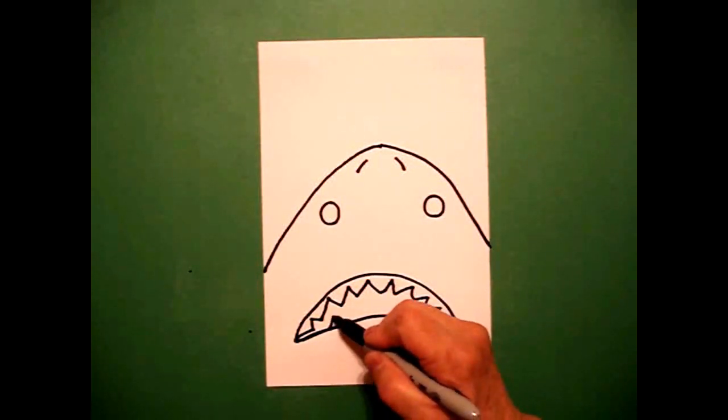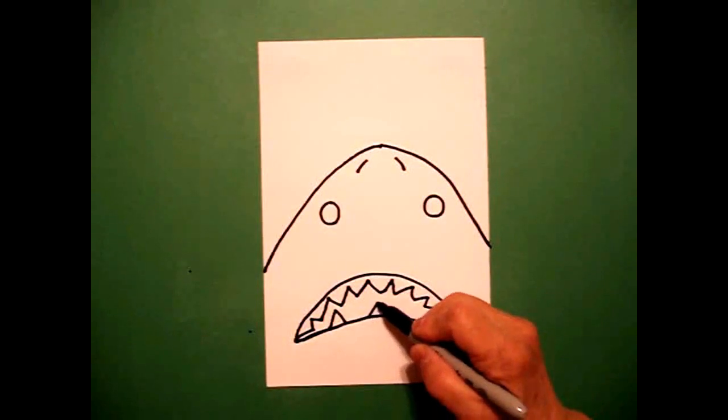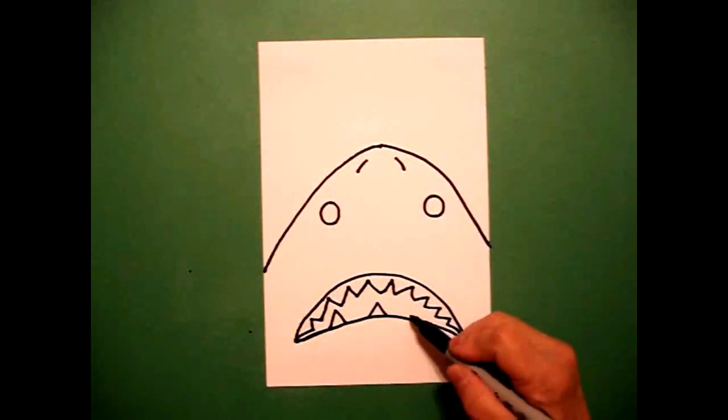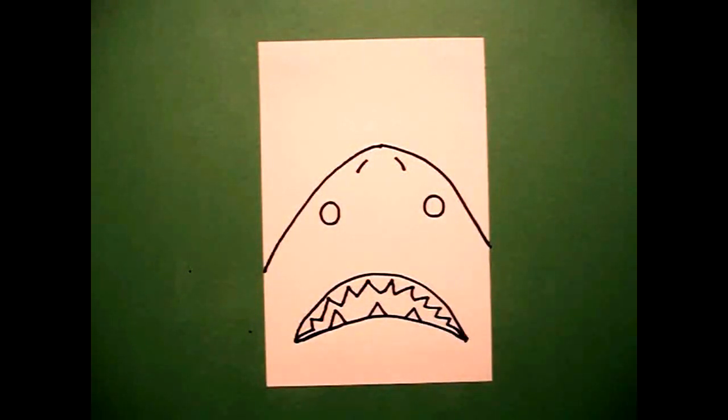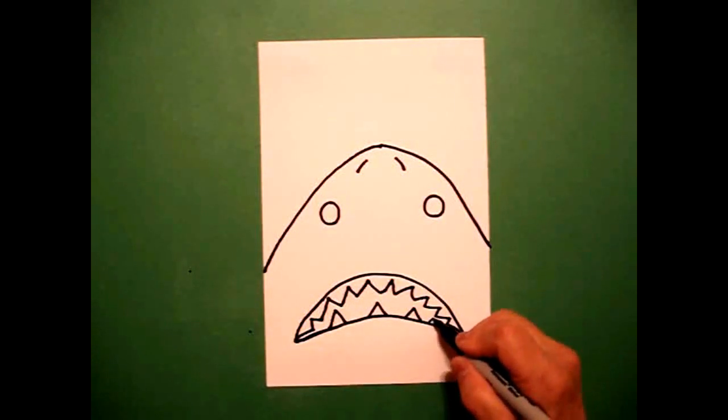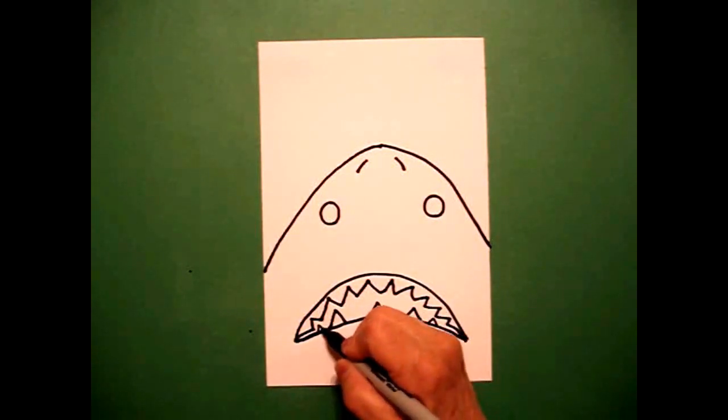On the bottom, I'm just going to add some triangles. One, two, three, maybe a little one here, four, and a little one on the left, five.